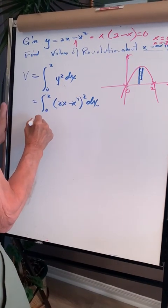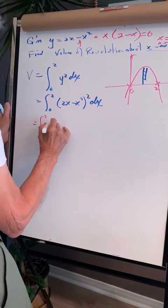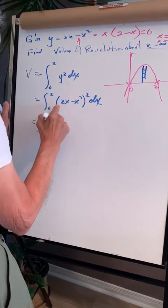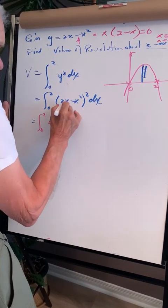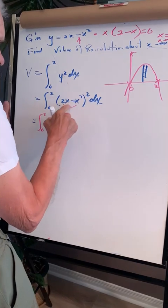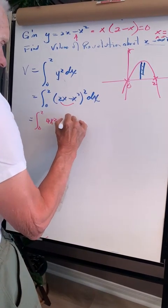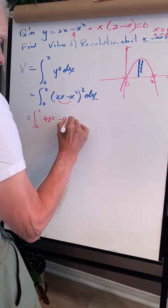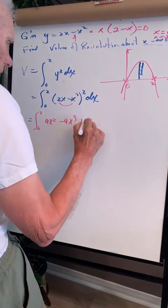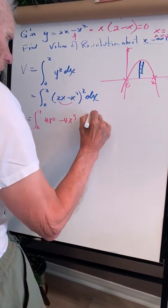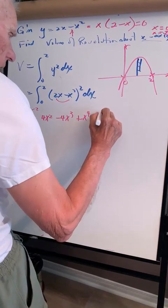Before we integrate, we must expand it. Squaring (2x - x²) gives: 4x squared, then the product of the two terms is 2x cubed, doubled gives minus 4x cubed, and squaring the last term gives x to the 4th.